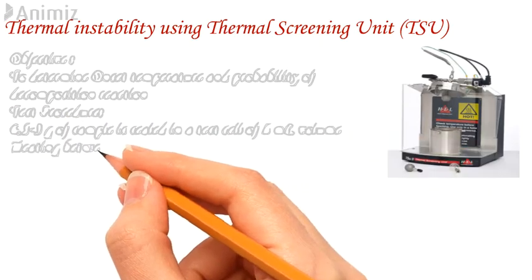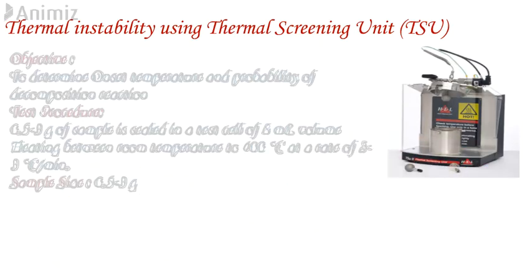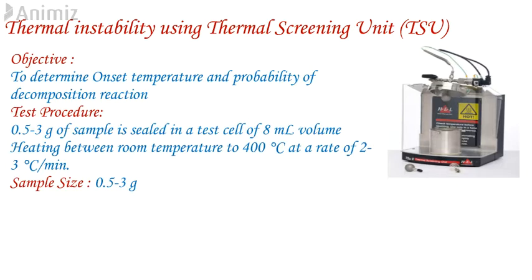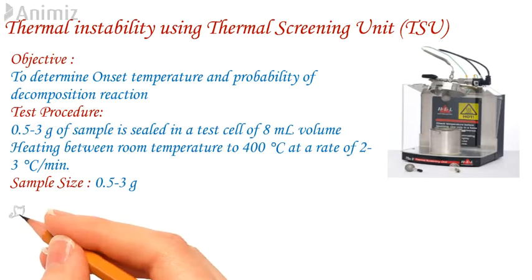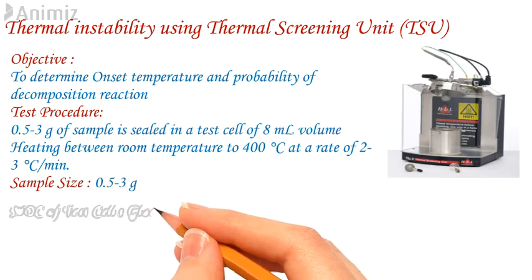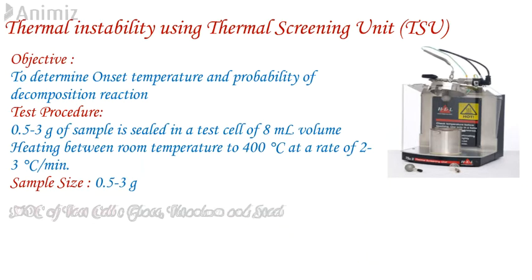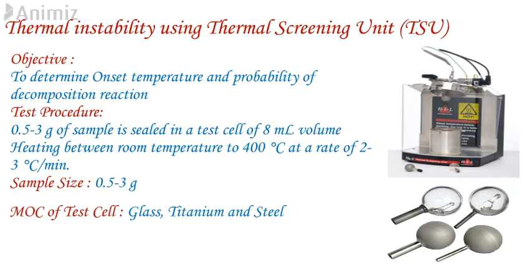0.5 to 3 grams of sample is sealed in a test cell of 8 ml volume. The test cell can be of various materials, mostly made of glass, titanium, and steel. It is then subjected to heating in an automated heating furnace, constantly monitored by computerized software. Mostly TSU experiments are conducted between room temperature and 400 degrees Celsius at a rate of 2 to 3 degrees Celsius per minute.